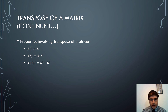Properties involving transpose of matrices: First, the transpose taken two times results in the same matrix, i.e., (A^T)^T = A. Next, (AB)^T = A^T * B^T. You can verify this with random examples. Finally, (A + B)^T = A^T + B^T — the transpose of the sum of two matrices equals the sum of their individual transposes.